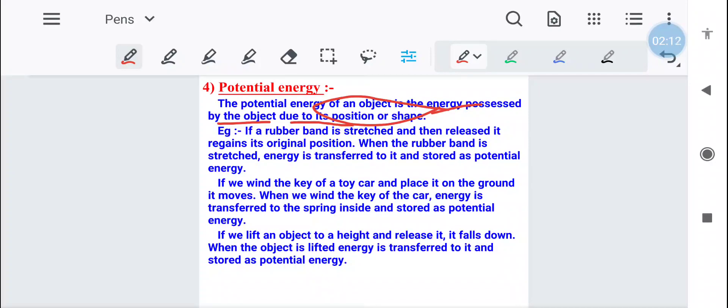For example, an example is given here that you took a rubber band, stretched it, and then released it. When you release the rubber band, it comes back to its original position. This work we do a lot at home. When the rubber band is stretched, at that time some energy is transferred to it, and the energy that is transferred is stored as potential energy.